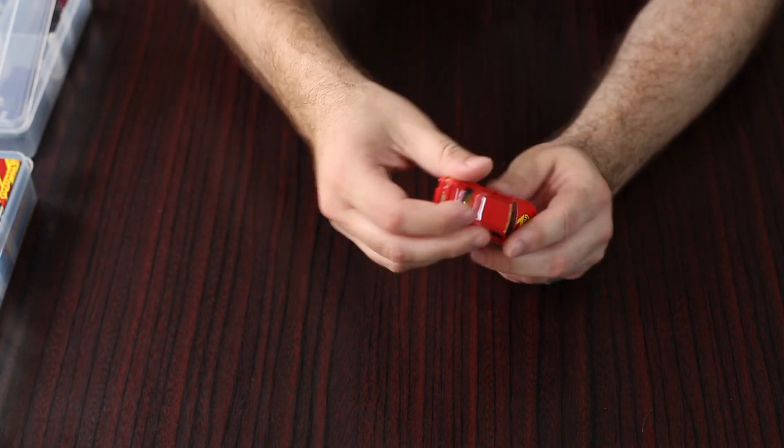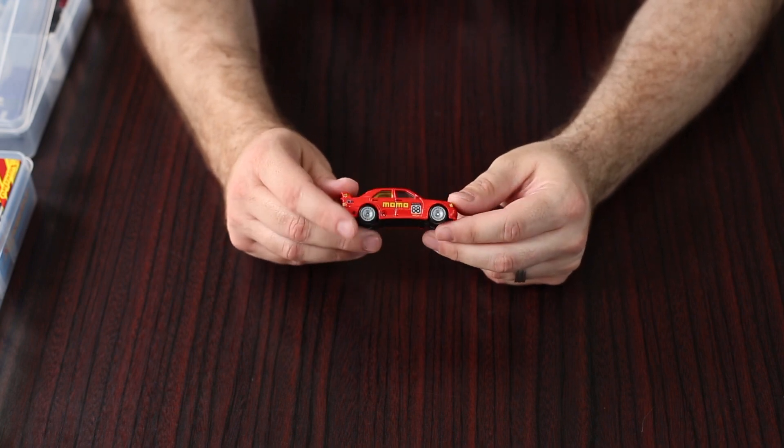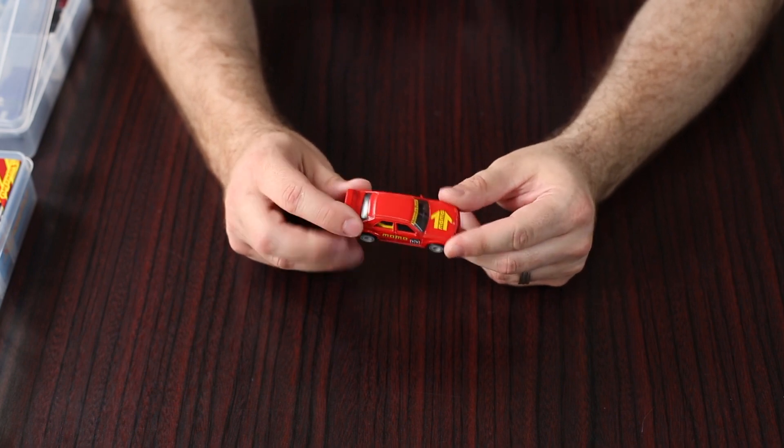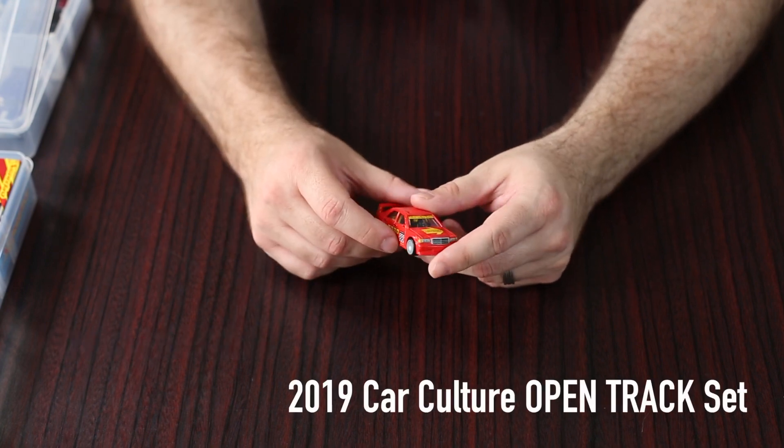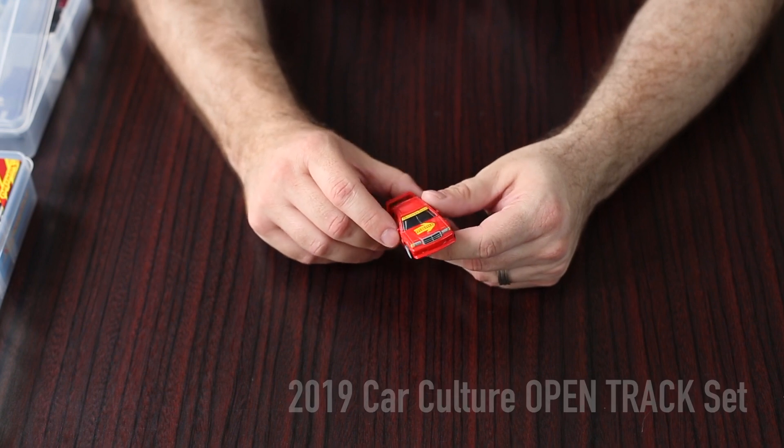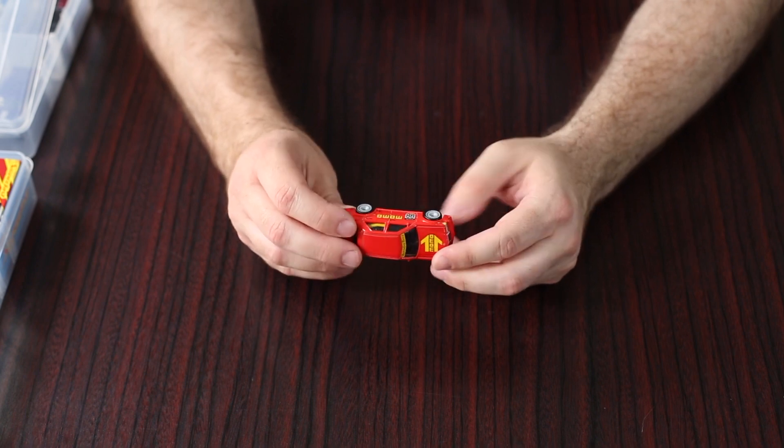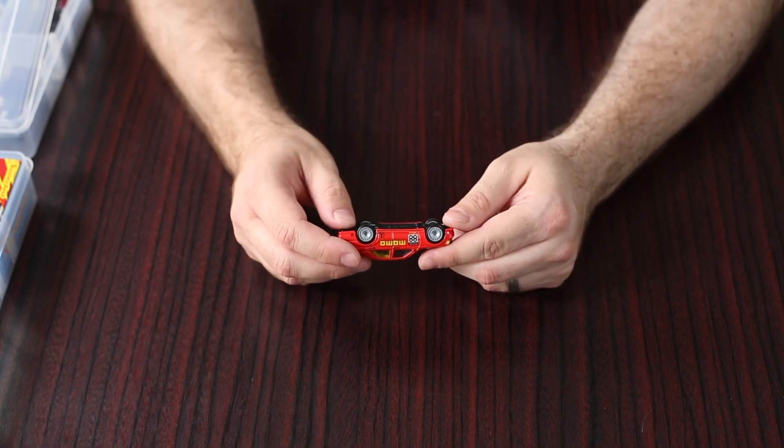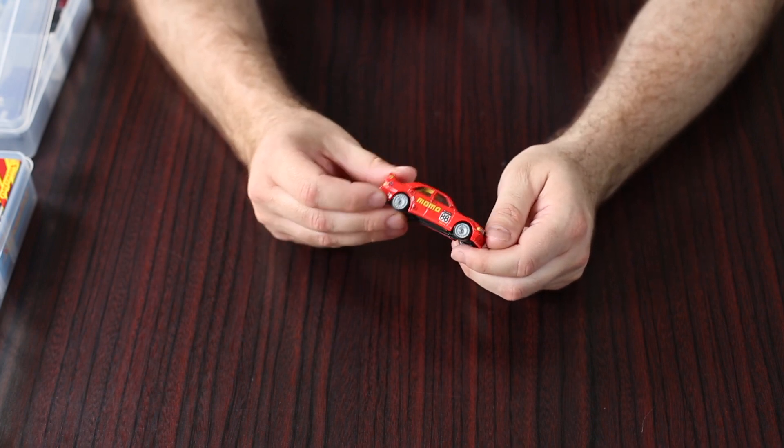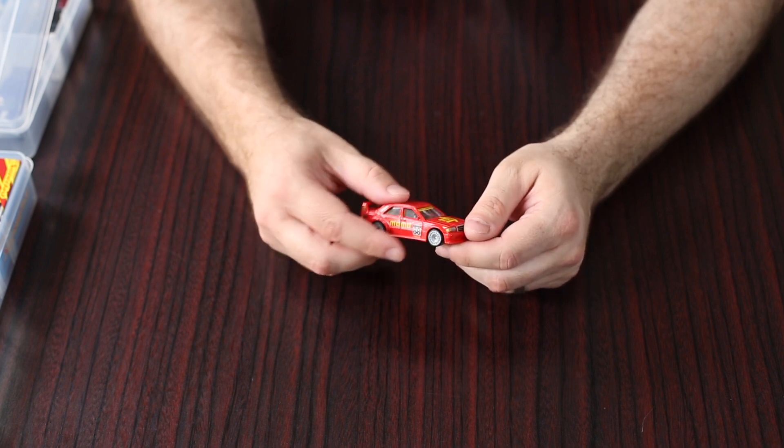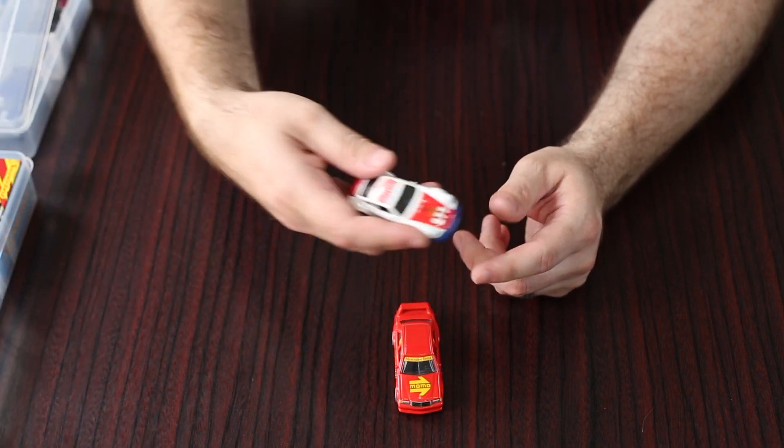And then going over to something a bit more modern, the Mercedes 190E in the Momo Deco. This one from the race day set, if I'm not mistaken. I hope I got that right. It was one of the race day car culture sets anyway. Those aero wheels, immediately identifiable Momo Deco.